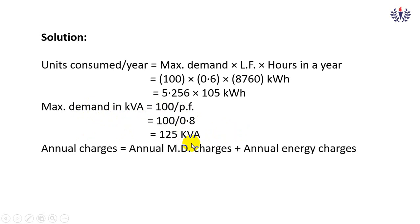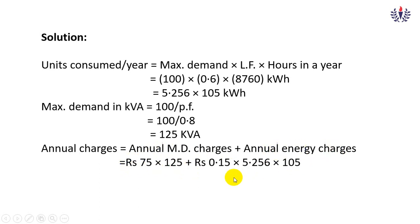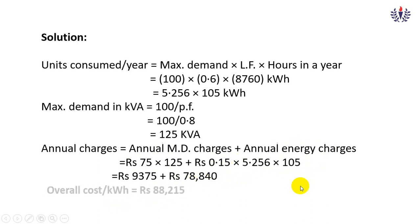Annual charges = annual MD charges + annual energy charges = (rupees 75 × 125) + (rupees 0.15 × 526,000). Adding both products gives the total annual bill of rupees 88,215. This is the overall annual bill for this consumer.